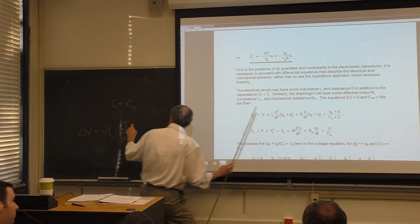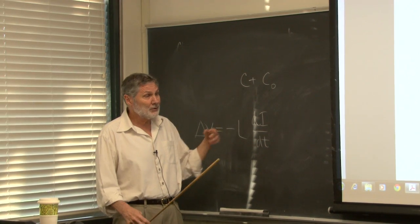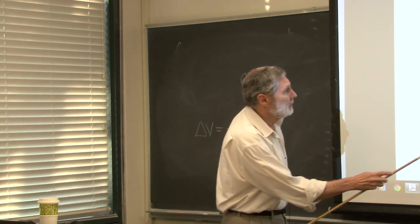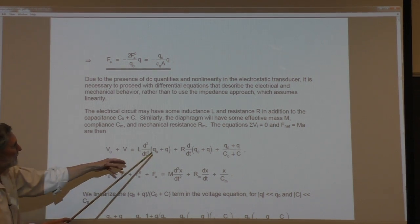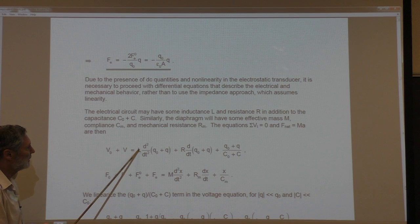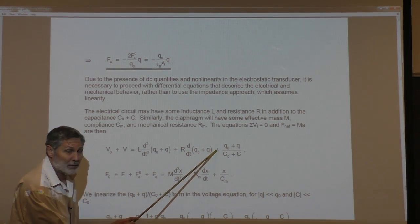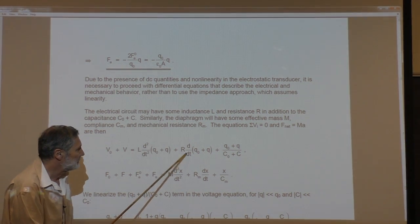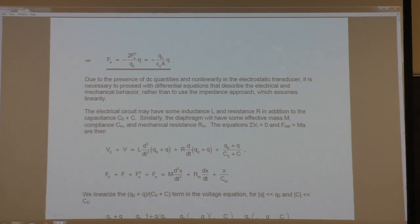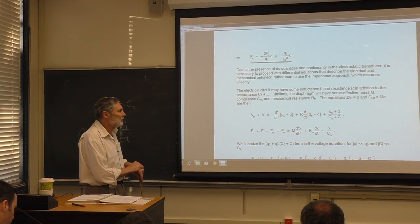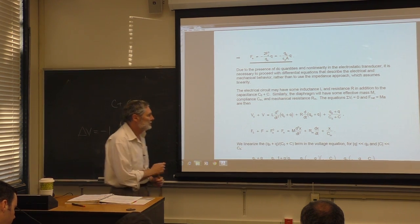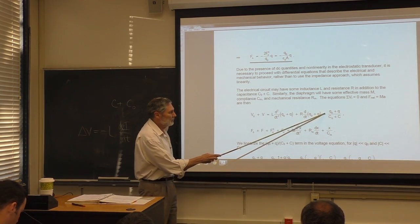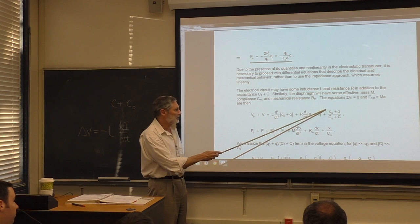The current is dq/dt and the drop across the resistor is R·dq/dt. The drop across the capacitor is q/C. Since the total capacitance is nonlinear we need to linearize it. On the mechanical side we have Newton's second law: total force equals mass times acceleration, with stiffness and damping terms.